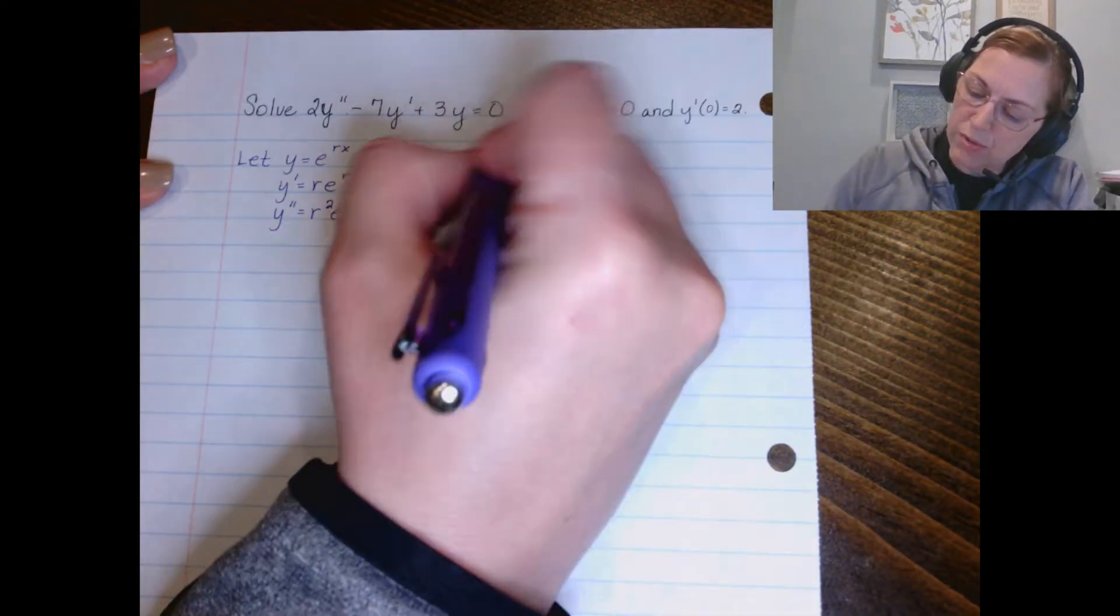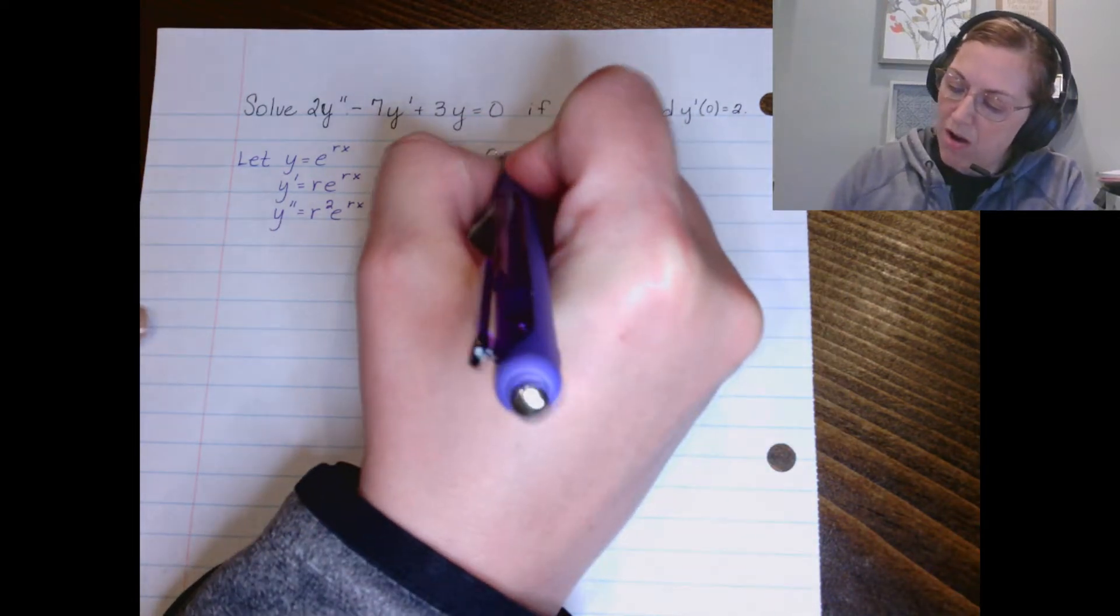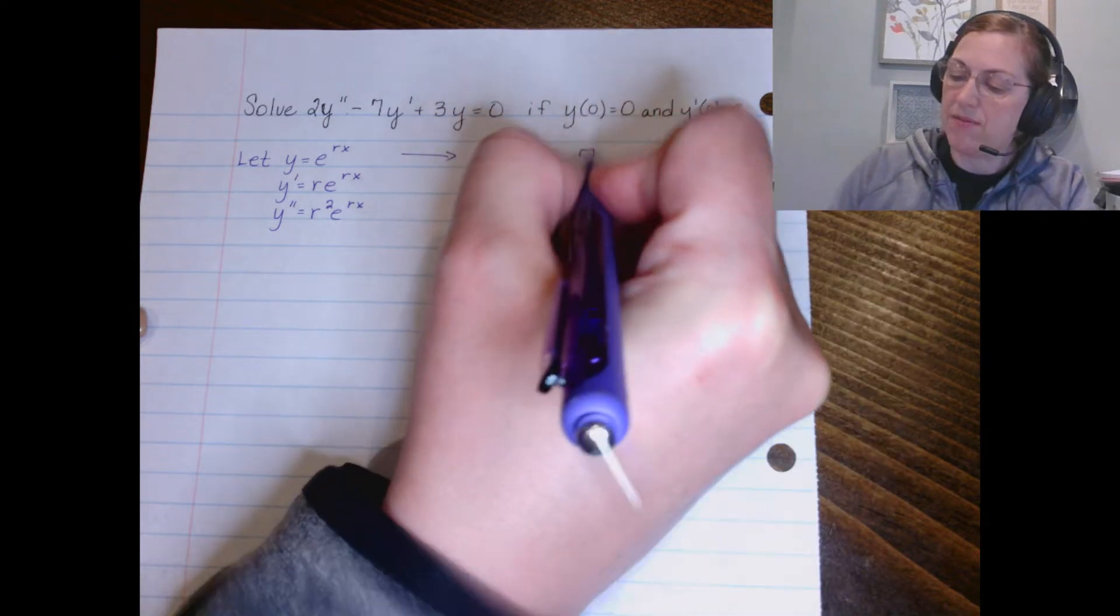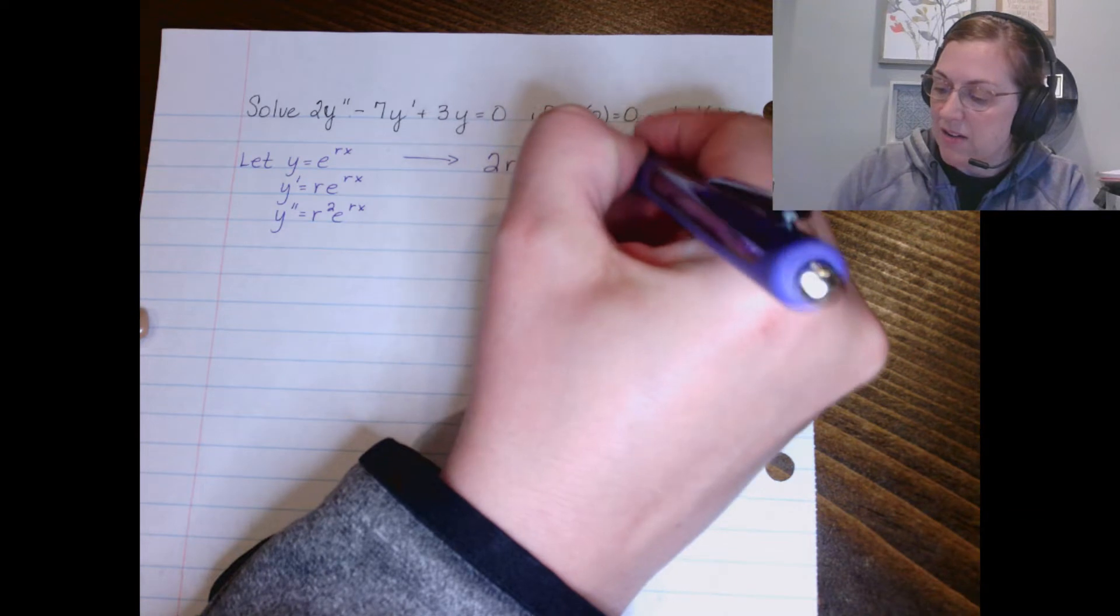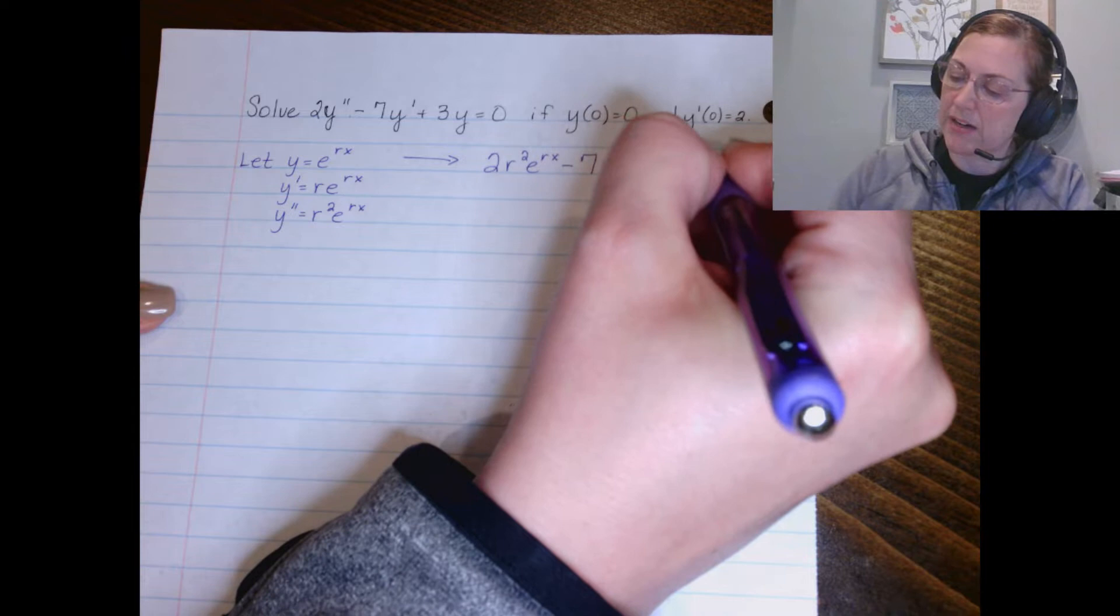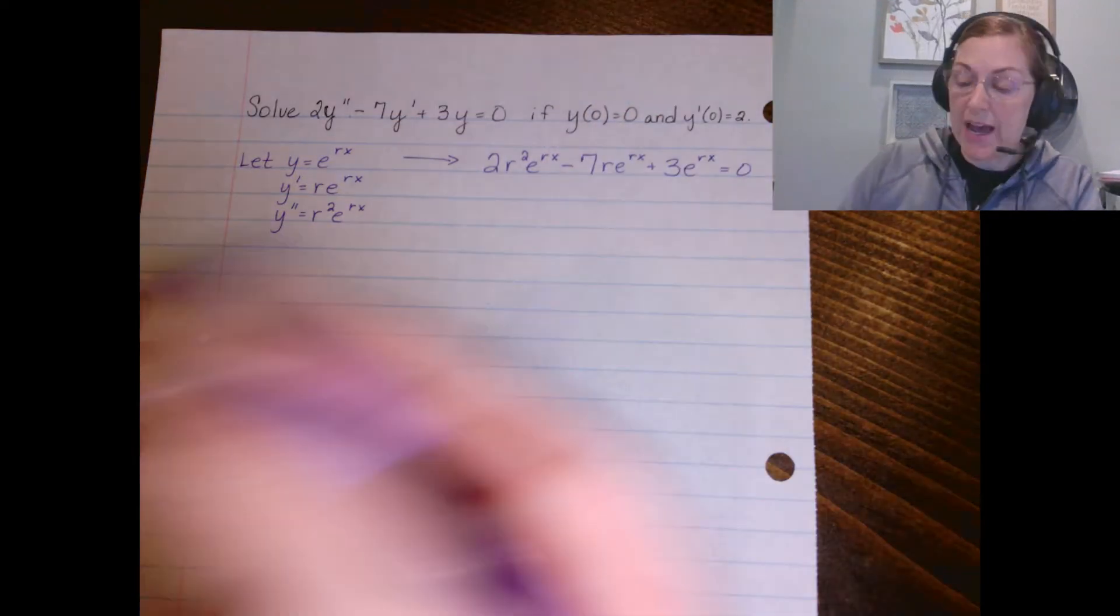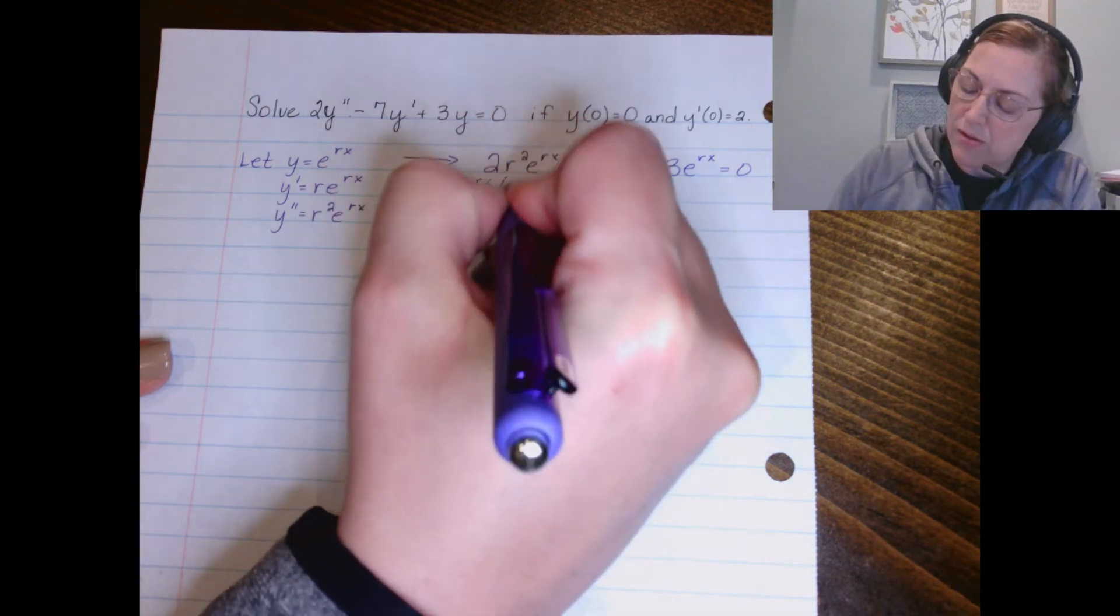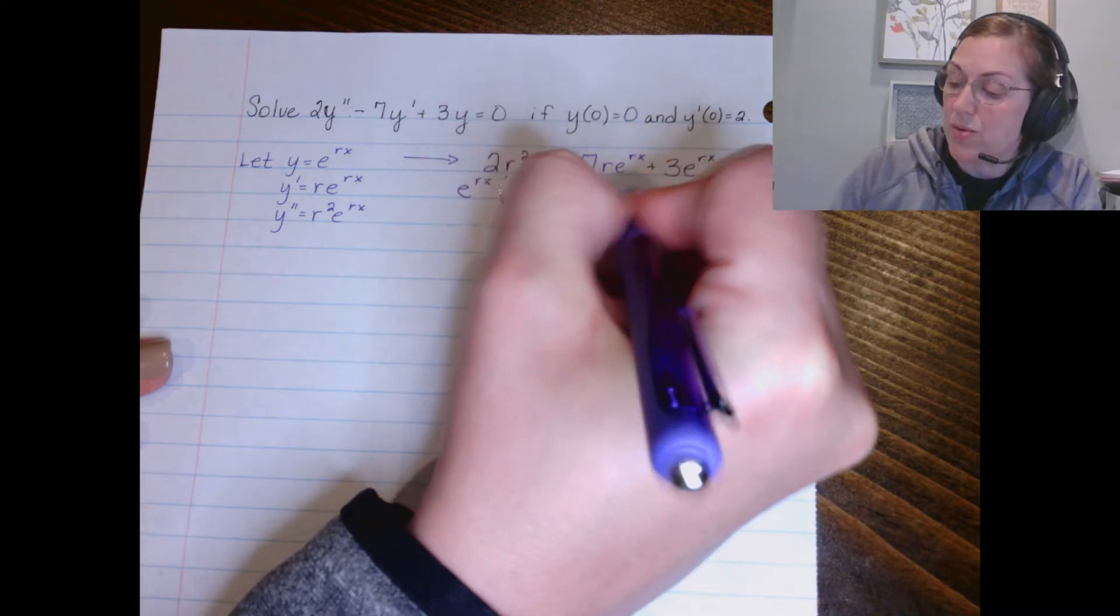So I've got 2 times y double prime, so that's 2r² e^(rx), minus 7 times y prime, which would be r e^(rx), and then plus 3 times y, which would be e^(rx), and that equals zero. Now we can see that each of the terms has an e to the rx, so we will factor that out. We've got 2r² - 7r + 3.